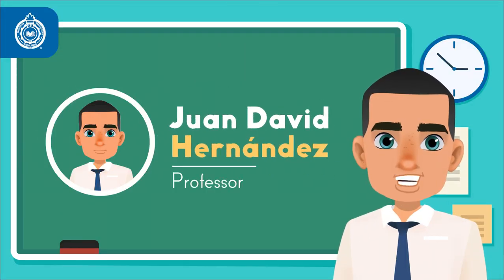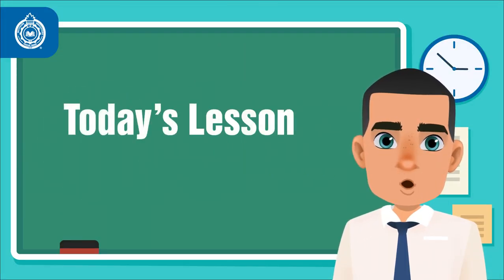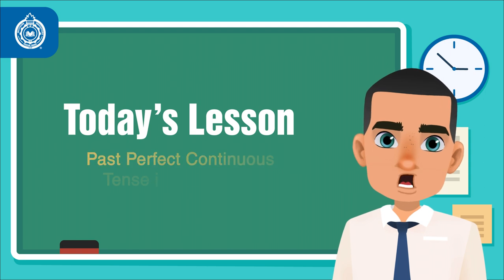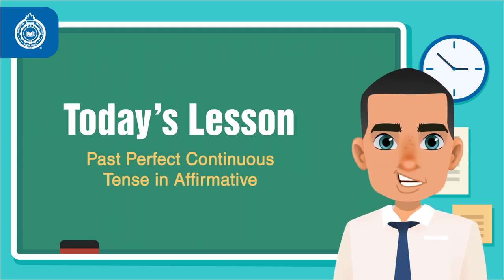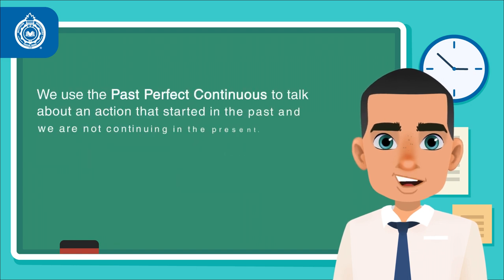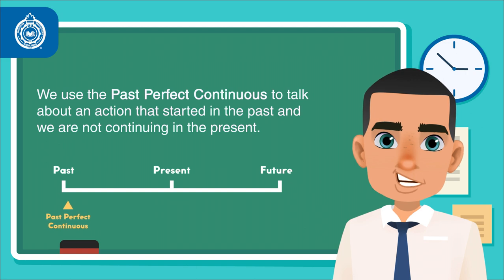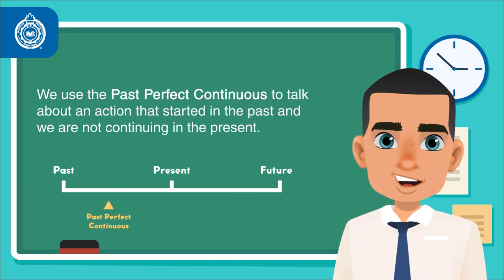Hello, this is Activate Your Grammar. Today we're going to look at the past perfect continuous tense in affirmative sentences. We use the past perfect continuous to talk about an action that started in the past and we are not continuing in the present.